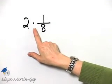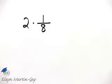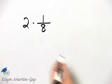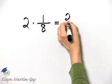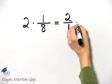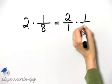Let's perform this indicated operation and it is multiplication. So if you'd like, you can write this number 2 as the fraction 2 over 1 times 1 over 8.